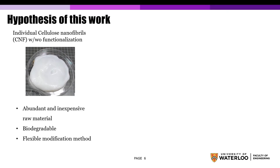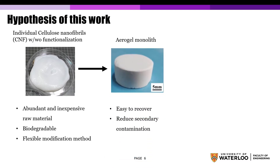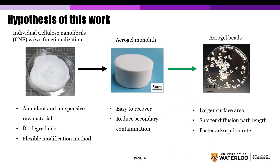In many previous studies, cellulose nanofibrils were directly used in fiber form for metal ions adsorption. This causes secondary contamination because it is not easy to recover the single fibers after adsorption. So herein, we assemble the individual fibers into aerogel bead form to solve this problem. Our hypothesis is that smaller aerogel beads will possess larger surface area, shorter diffusion path length, and faster adsorption rate compared to aerogel monoliths.